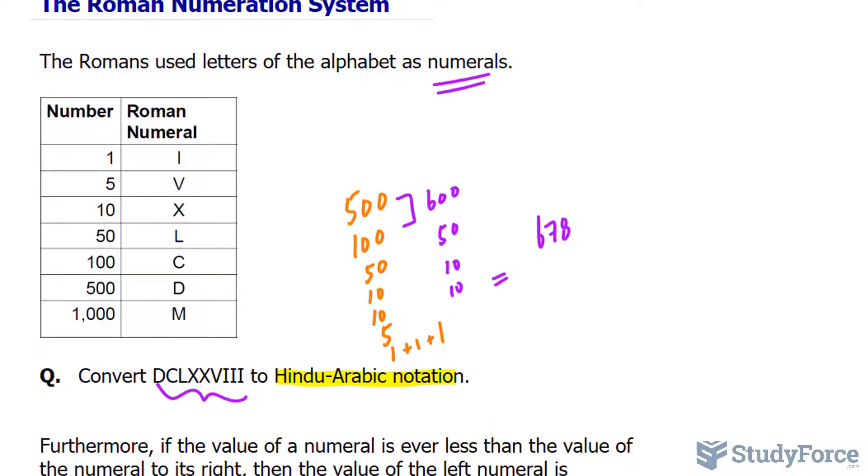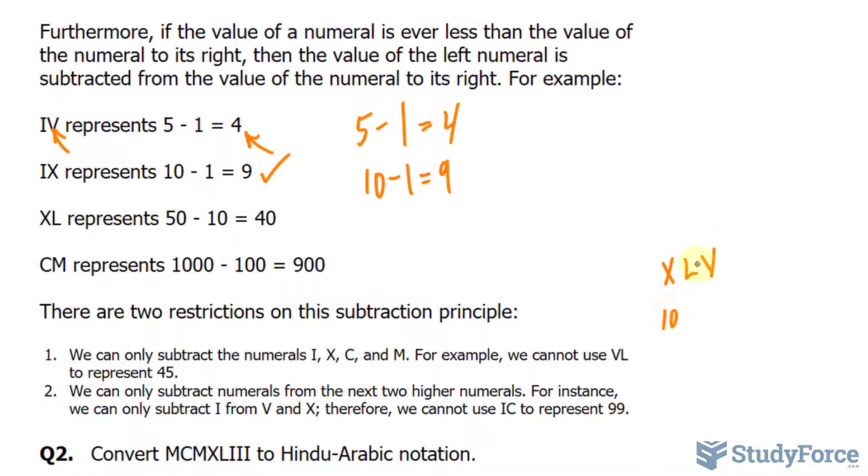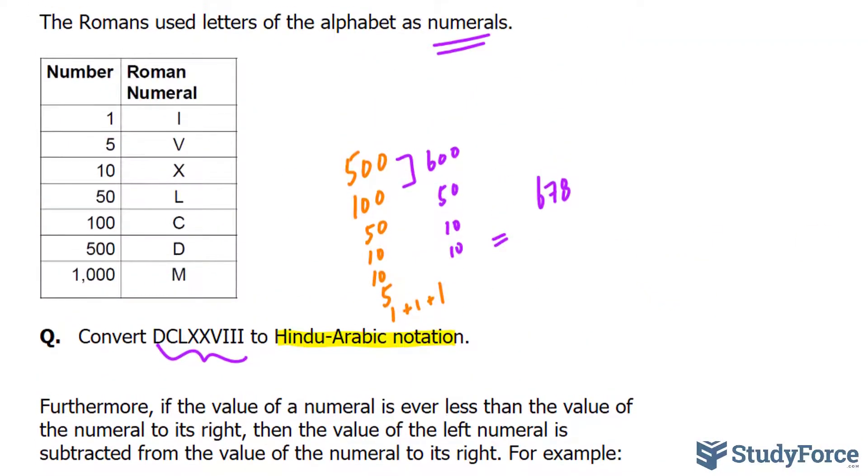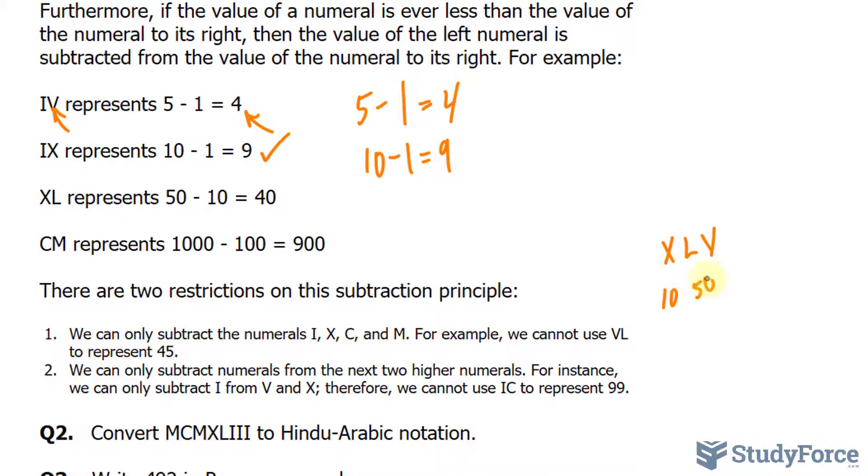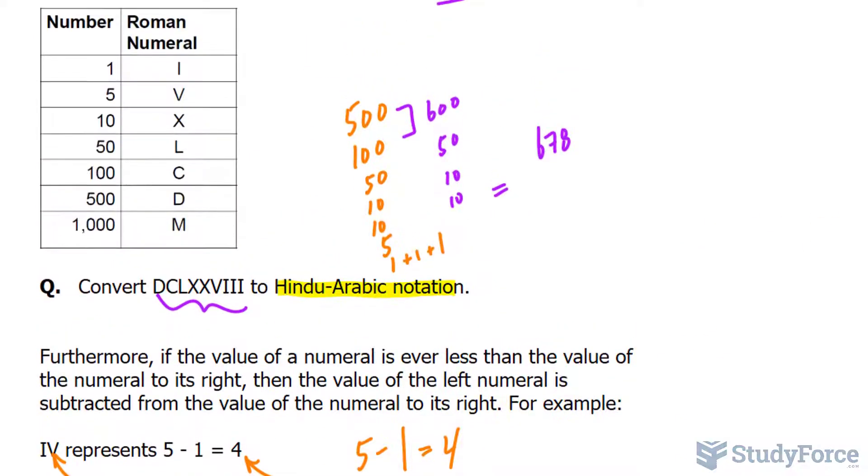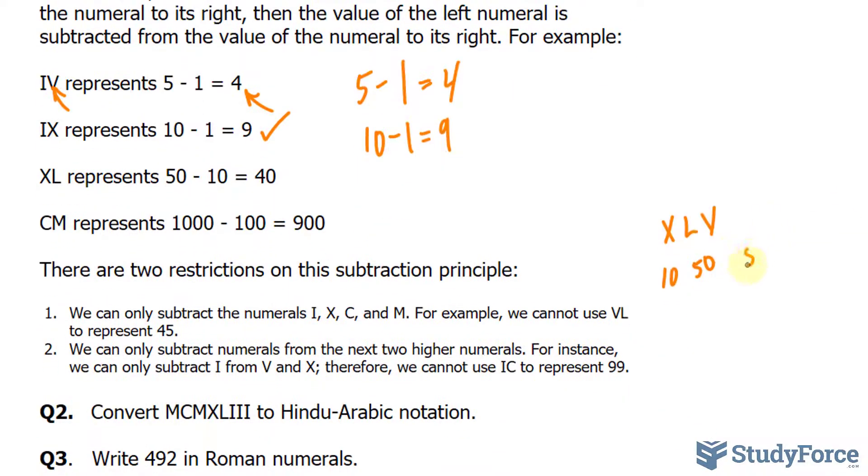To represent the number 45, we write down XLV, where X is 10, L is 50, and V is 5. Because we have X and L beside each other, it's 40. And then this 5 gets added to it, and we get 45.